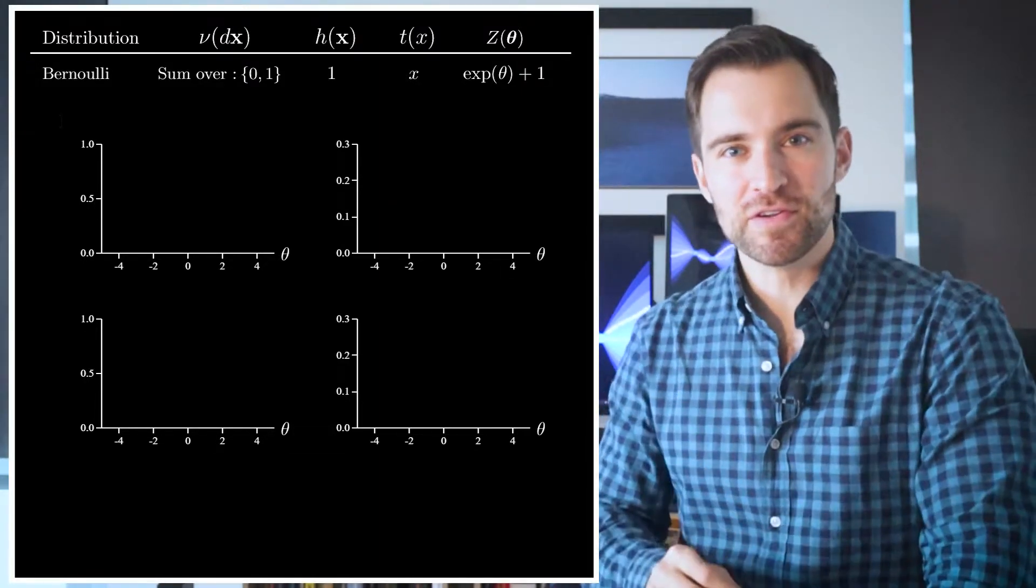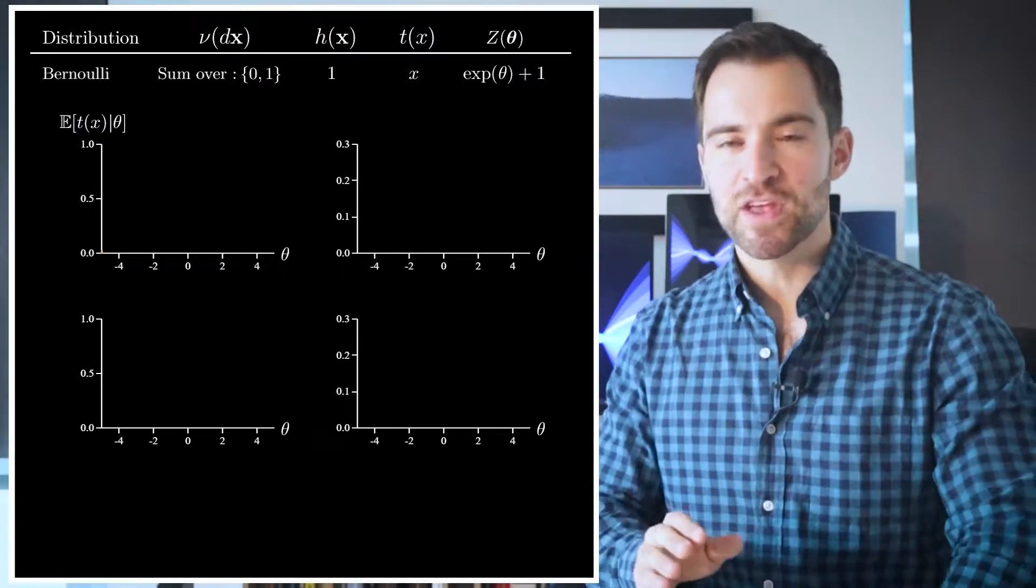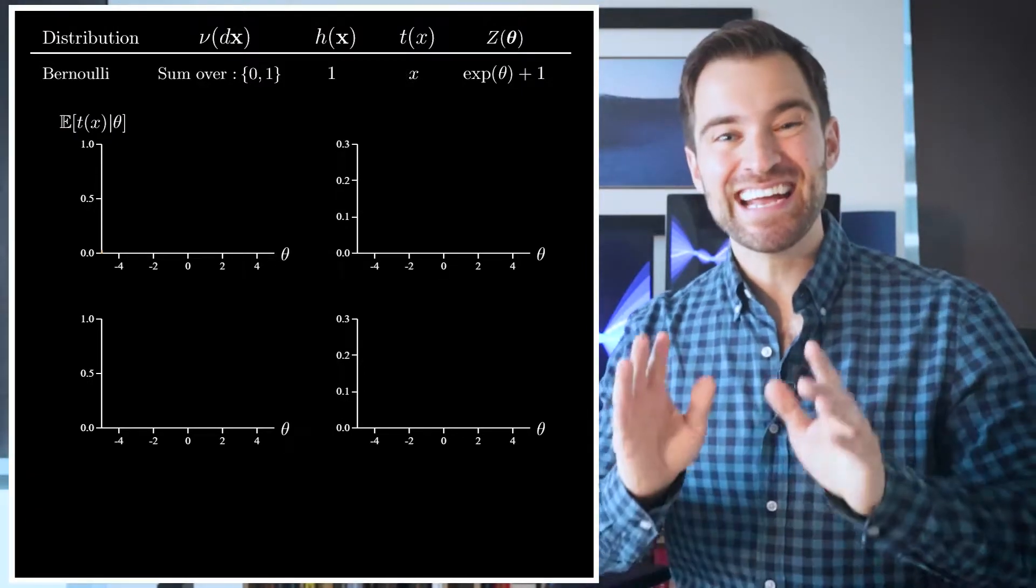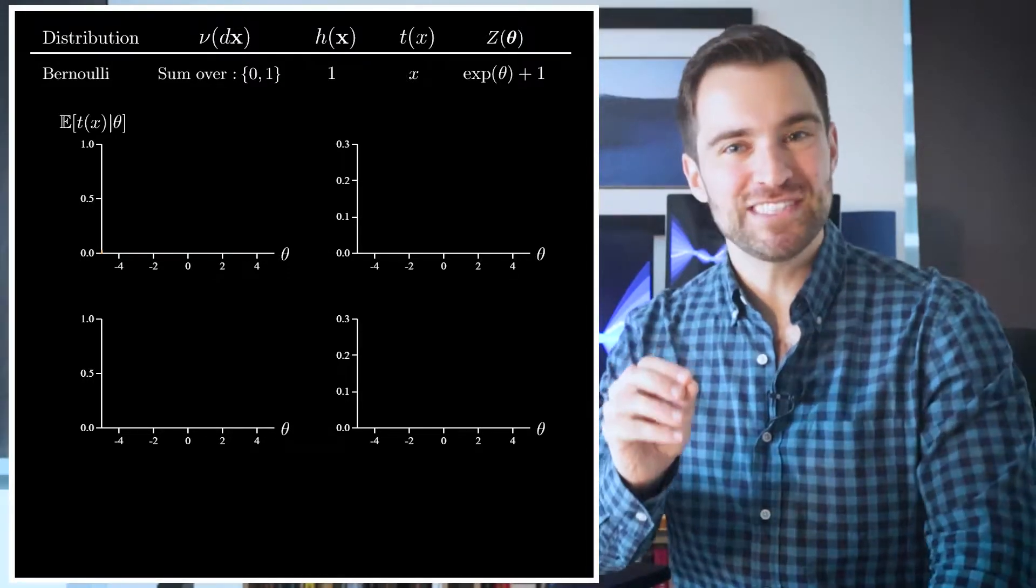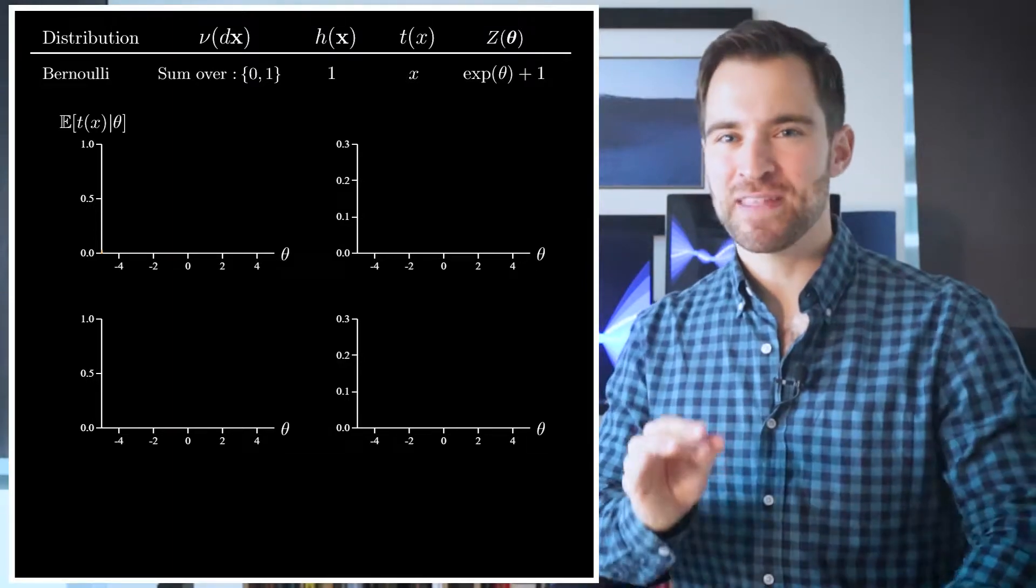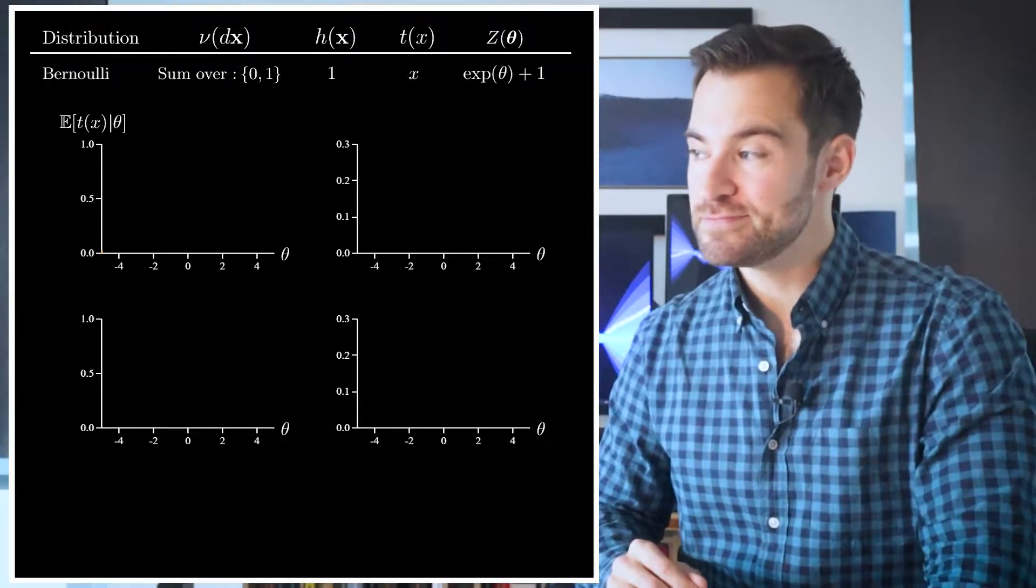In the top left, along the vertical axis will be the expected value of t(x). That is, for a specific value of θ, that gives a distribution of x, which implies some mean value of t(x). So we can ask, as we vary θ, how does the mean value change? Well, it looks like this.